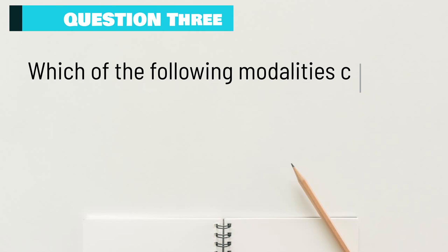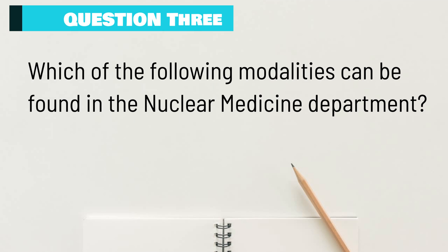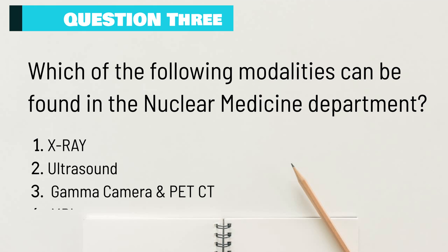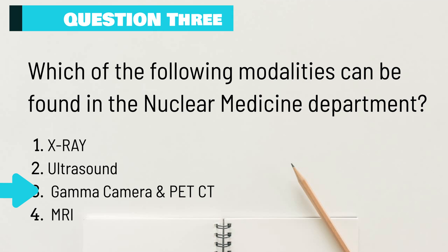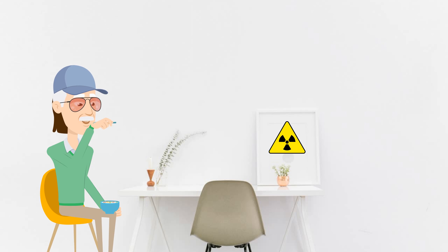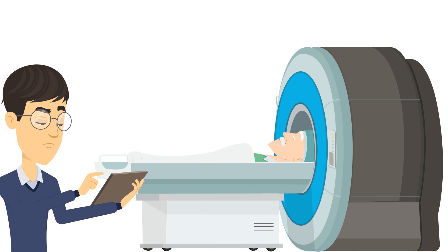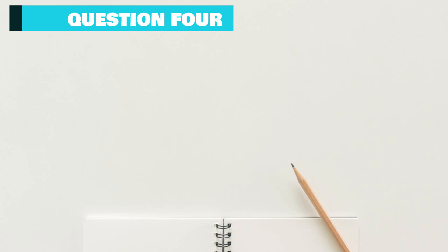Question 3: Which of the following modalities can be found in the Nuclear Medicine Department? A. X-Ray. B. Ultrasound. C. Gamma Camera and PET CT. D. MRI. Nuclear Medicine detectors capture photons that have been administered into the patient's body. Gamma photons from isotopes and positron emissions are used to capture images. The correct answer is Gamma Camera and PET CT.